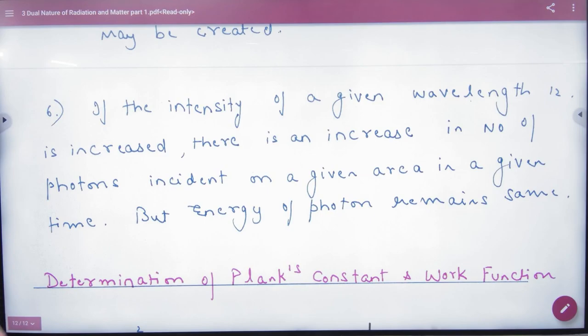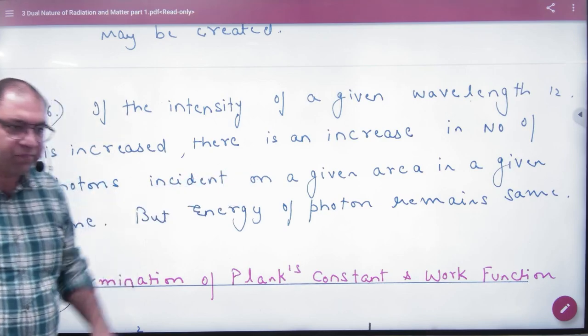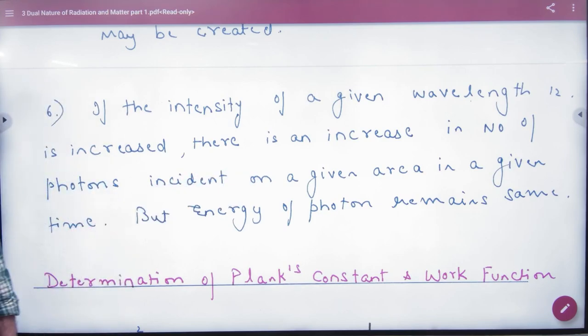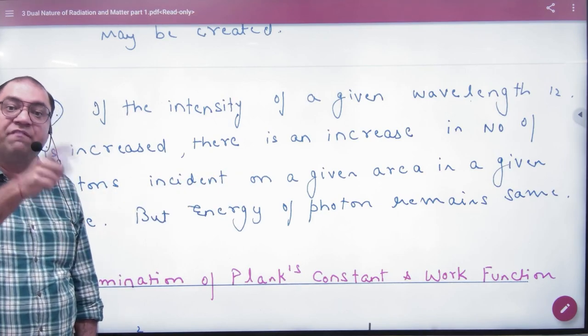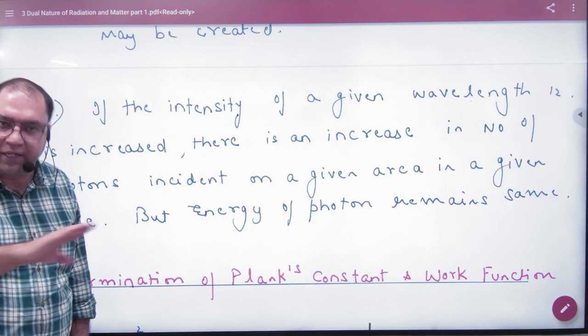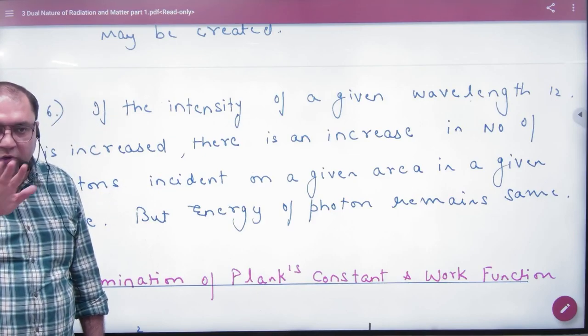Next is, if the intensity of a given wavelength is increased, there is an increase in number of photons incident on a given area. If I increase the intensity of a given wavelength, I will increase the number of photons in a given area, given time. But energy remains the same. Because energy is dependent on frequency, not intensity. So, there are some rules of photon picture.